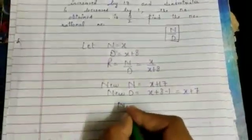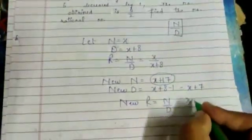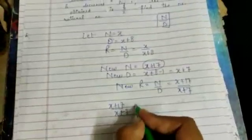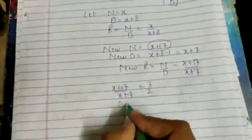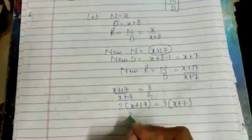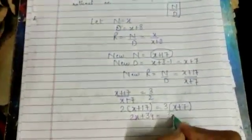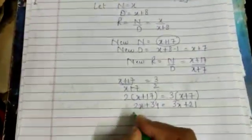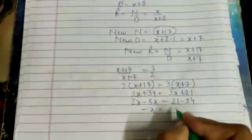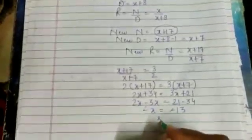So the new rational number is x plus 17 upon x plus 7, which equals 3 by 2. Cross multiply: 2 into x plus 17 is equal to 3 into x plus 7. That gives 2x plus 34 equals 3x plus 21. Taking 3x with 2x: 21 minus 34 gives minus x equals minus 13. So the value of x is 13.